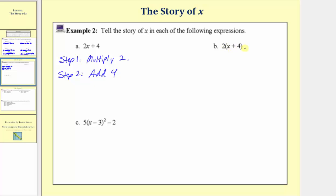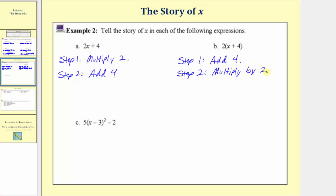Next we have two times the quantity x plus four, written as two and then parentheses x plus four. Following the order of operations, we simplify inside the parentheses first. So step one is: add four. And then for step two, after performing step one, we would multiply by two — we could say two multiplied by the result, or the result multiplied by two. We assume we perform this operation on the result of step one.